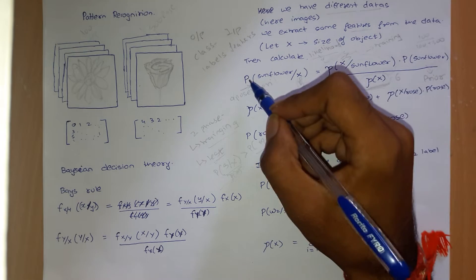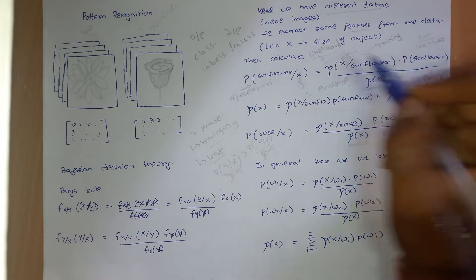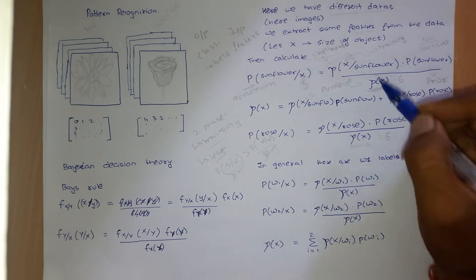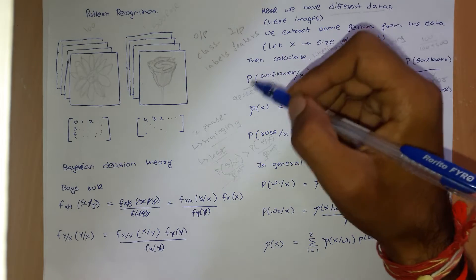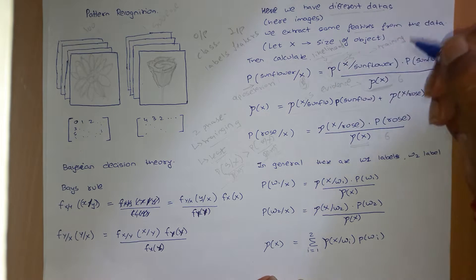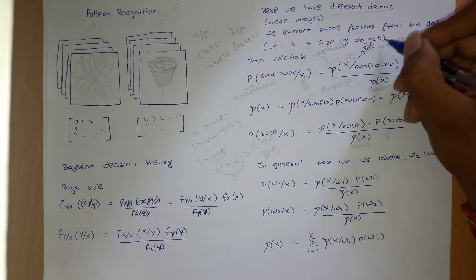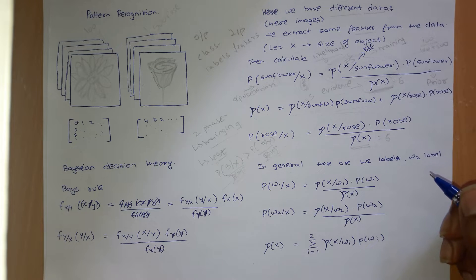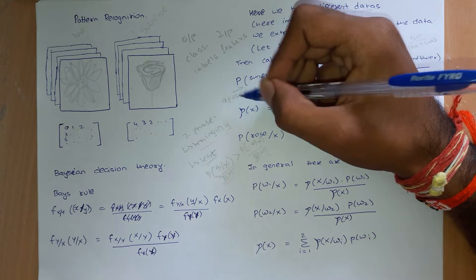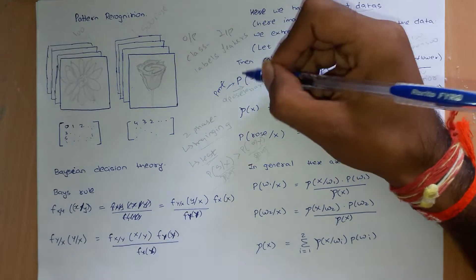Let us now concentrate on these terms. Please note that this particular P is different from this P. Wherever I have done a back like this, this is a small p. So small p's denote PDF — that is probability density function — whereas capital P's are basically discrete and denote PMF, probability mass function.